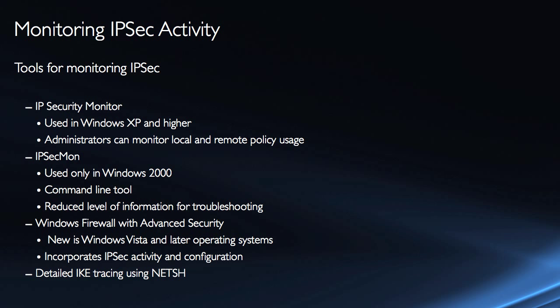New to Windows Vista and later operating systems is Windows Firewall with Advanced Security, which incorporates IPSec activity and configuration together with the firewall rules. Not only can we create connection security rules, but there's a monitoring node where we can see active connections, security associations, protocol statistics, and the like. We can also enable detailed internet key exchange tracing using NetSH, although that's most likely for troubleshooting purposes.